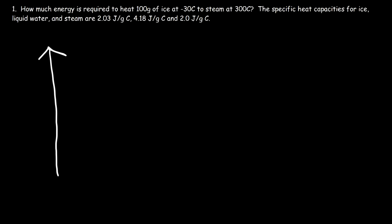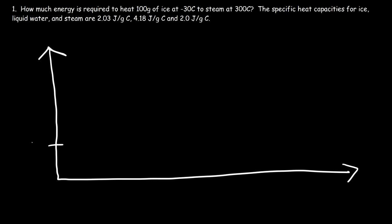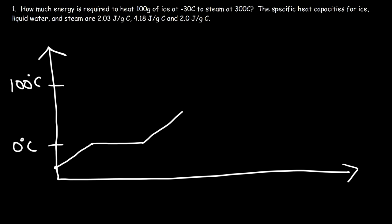Here's a question: how much energy is required to heat 100 grams of ice at negative 30 degrees Celsius to steam at 300 degrees? We're dealing with a heating curve where 0 and 100 degrees Celsius are key transition points. Starting at ice at negative 30, it takes energy to heat the ice, then melt it to liquid water, heat that water from 0 to 100, vaporize it into steam, and finally heat the steam from 100 to 300.